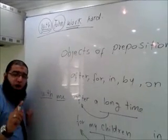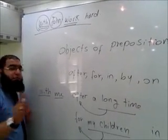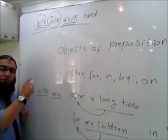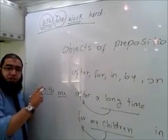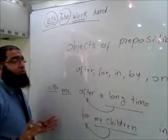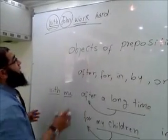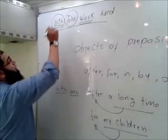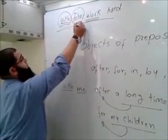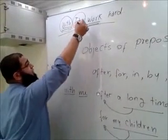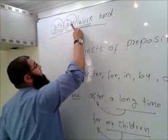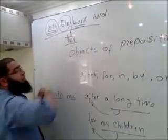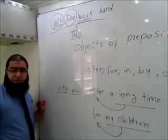Why is it incorrect? Because we have a missing subject. We don't have a subject. So to make it correct, we can say something like: 'With John, they work hard.' That makes it correct.